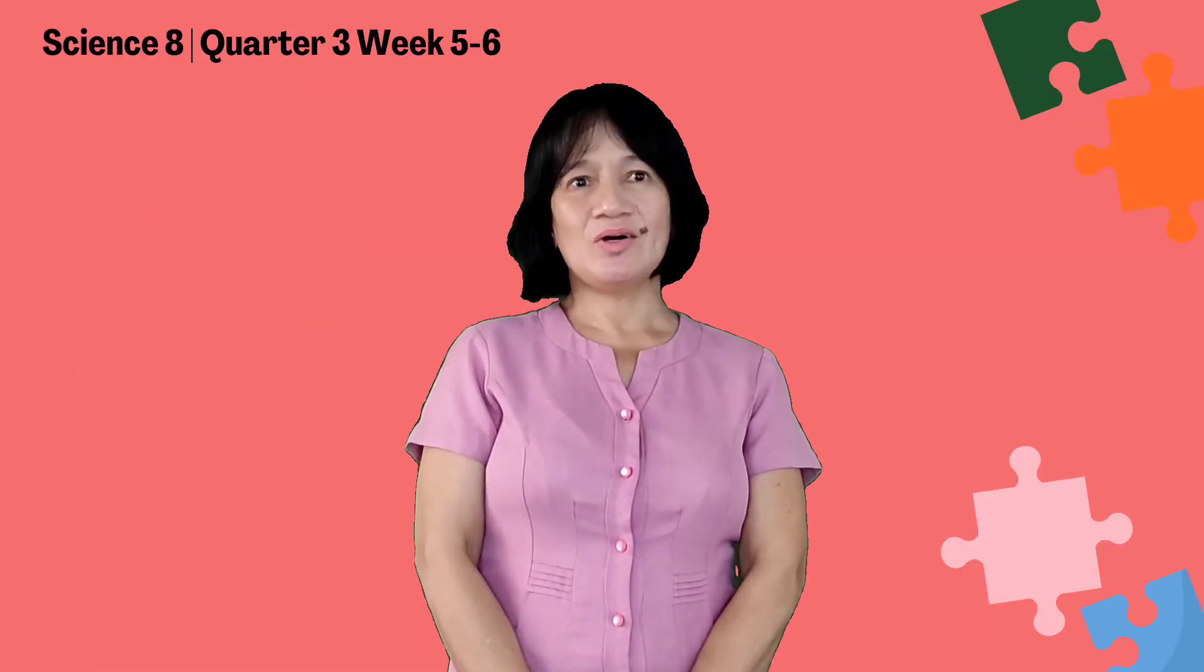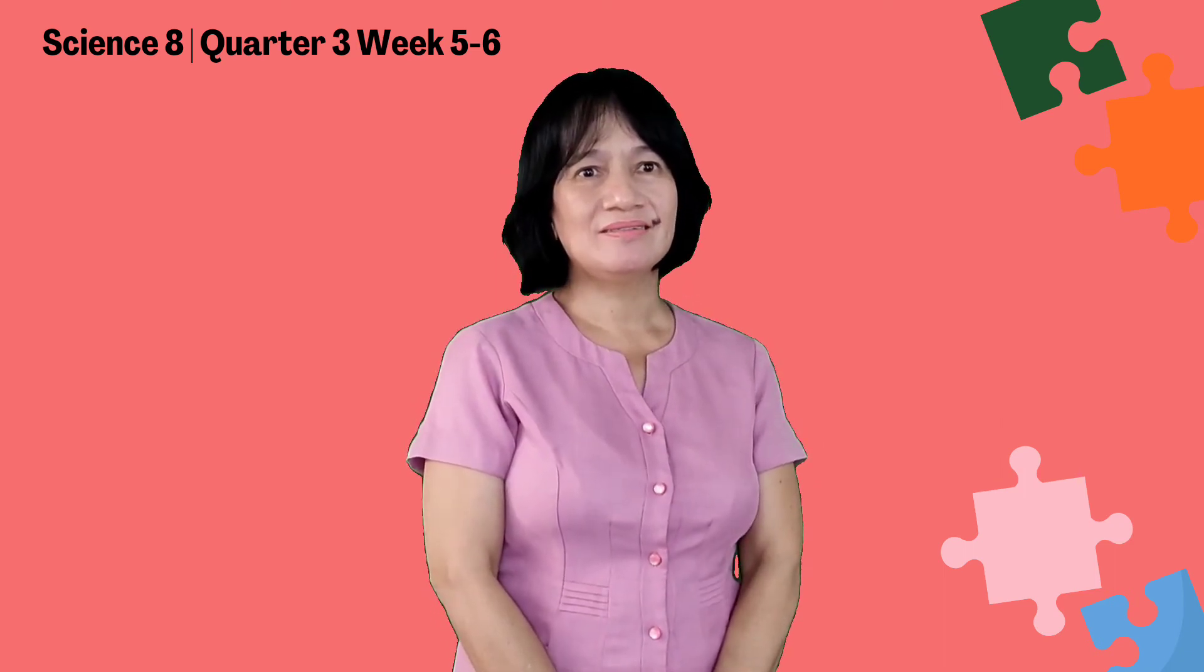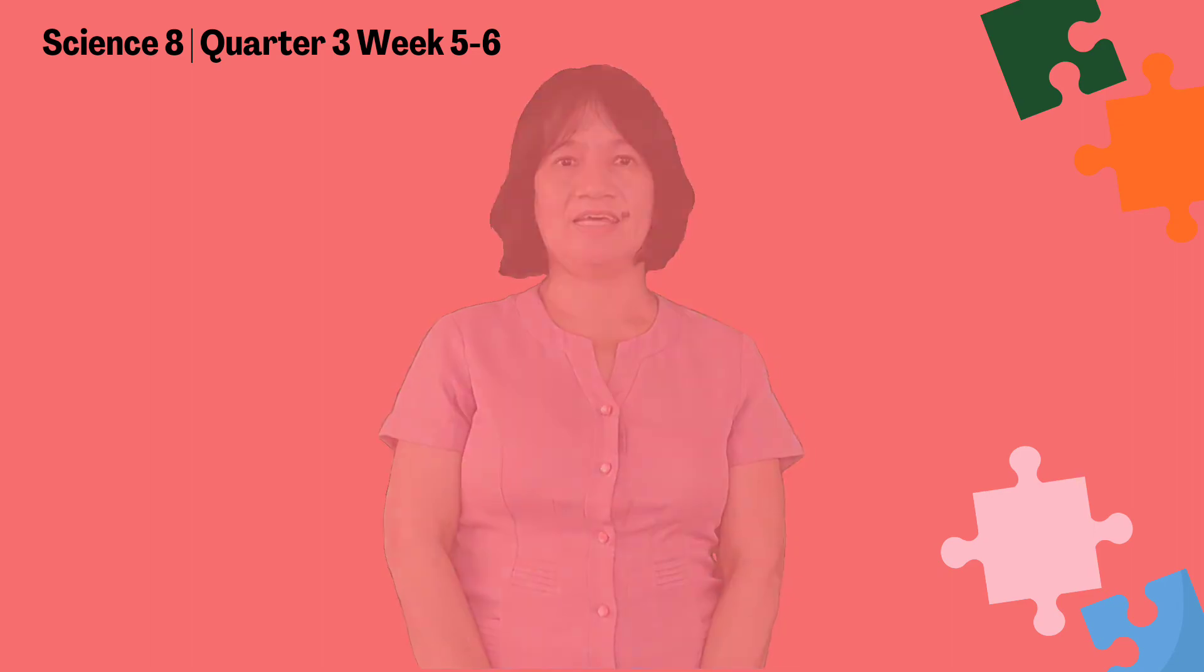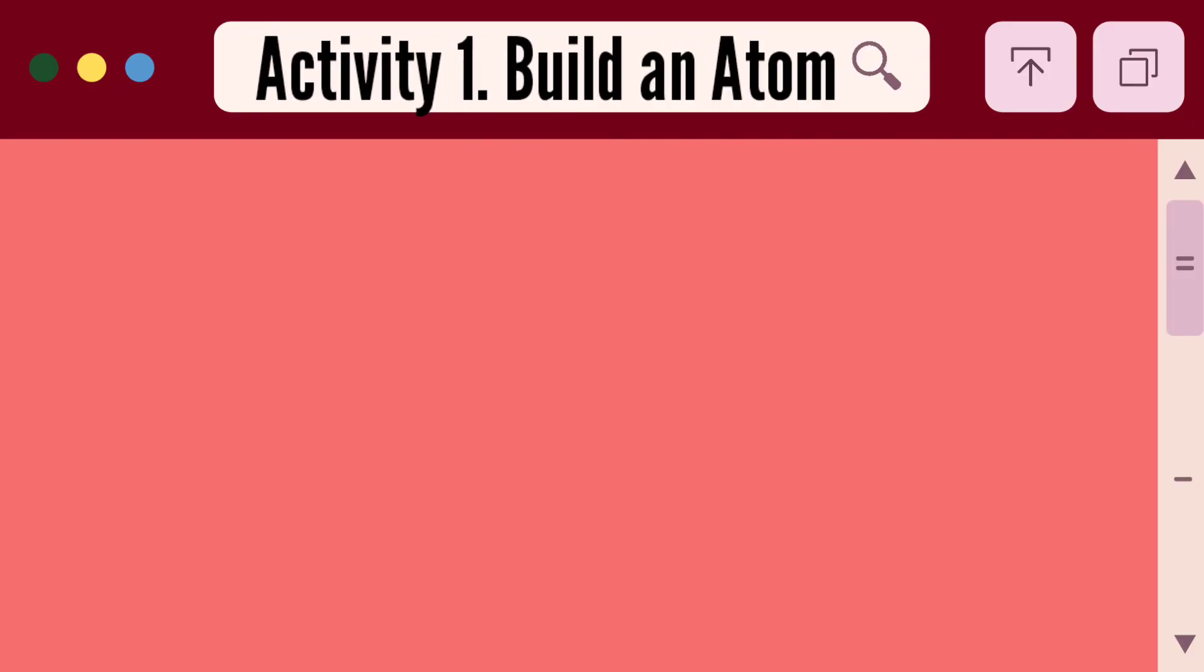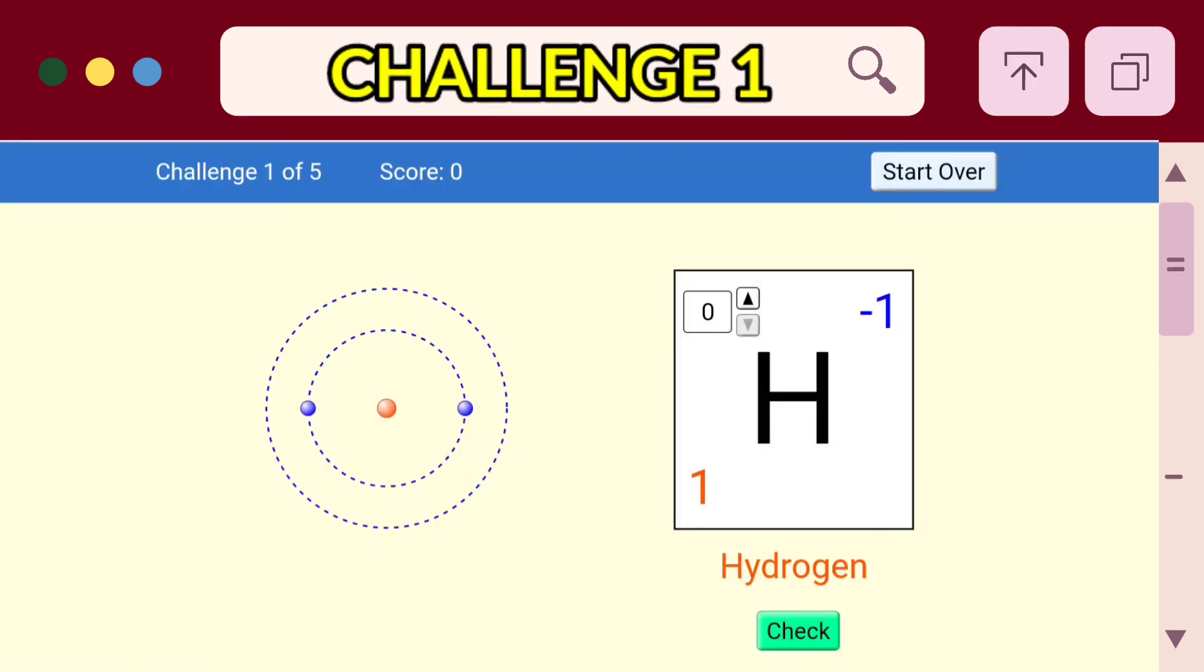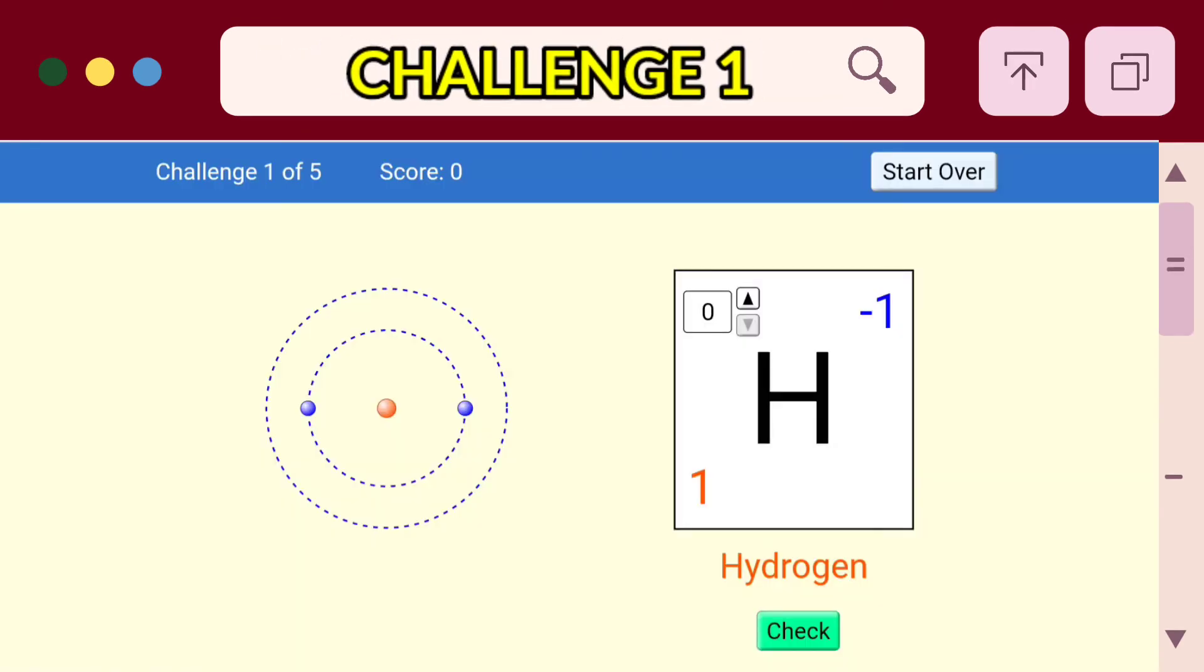Okay class, did you understand the lesson? Now, all of us have a very simple activity. Activity number one, build an atom. Identify the number needed to complete the identity of an atom. Challenge number one, what is the mass number of the atom of this element hydrogen? Very good. One is the correct answer.